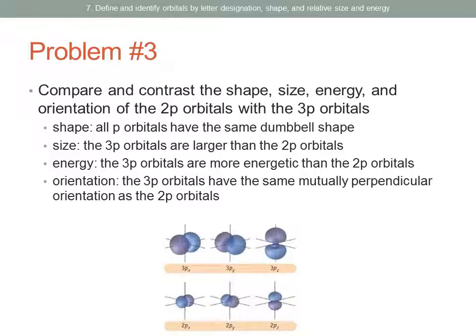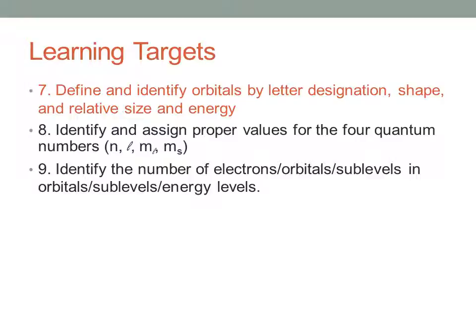Here are pictures of the orbitals we're talking about. The top row shows the 3P orbitals. Notice the shapes are the same dumbbell shape as the 2P orbitals, but they are just larger. They are all oriented on a different axis, just like the 2P orbitals, so the orientation is the same. That completes the problems for the first learning target — we have defined and identified the orbitals based on letter designation, shape, and relative size and energy.